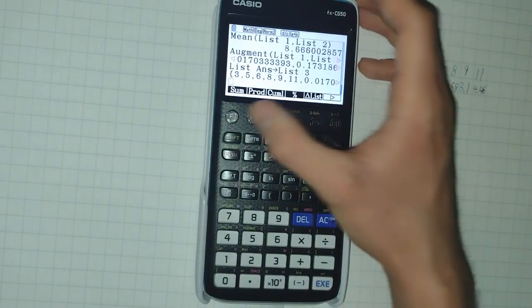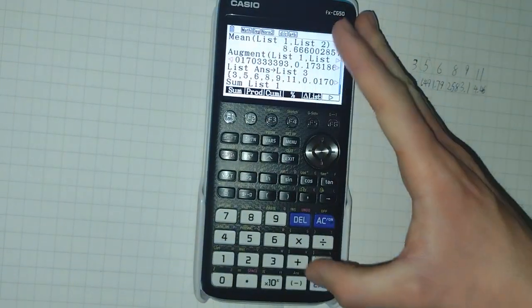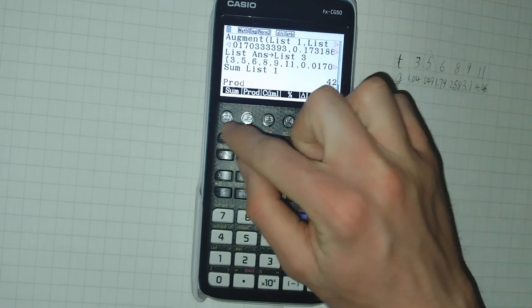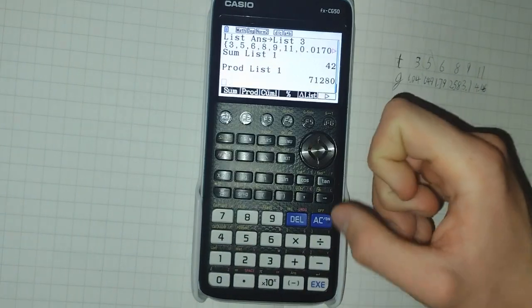Moving on. We now have sum. This calculates the sum of every item in a list. And product, which calculates the product of every item in a list.